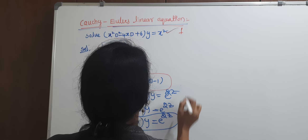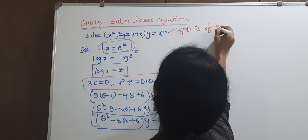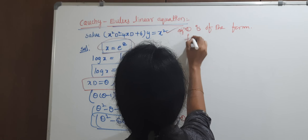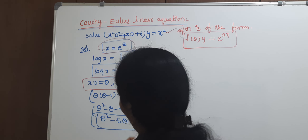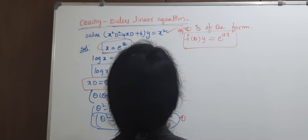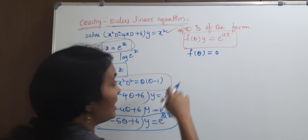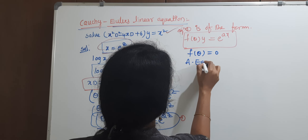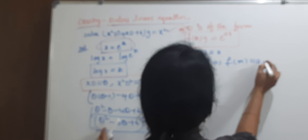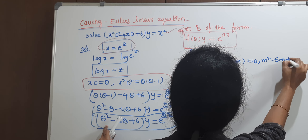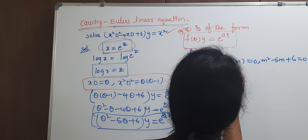Consider equation 1, which is of the form f(theta) of y equals e to the power of ax. From f(theta), write the auxiliary equation. The auxiliary equation is f(m) equals 0, with theta replaced by m. For the factors: m squared minus 5m plus 6 equals 0, giving (m minus 2)(m minus 3) equals 0.